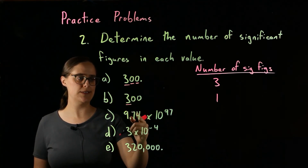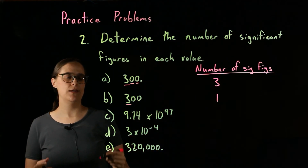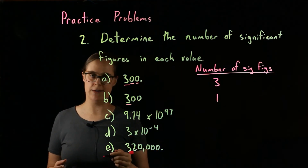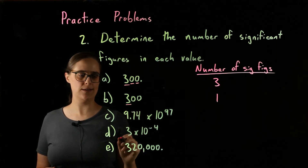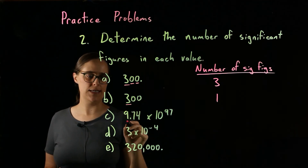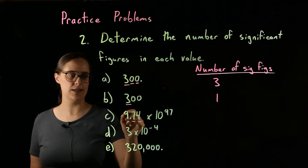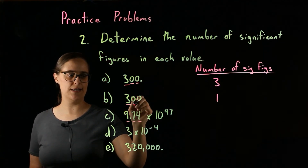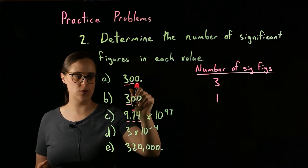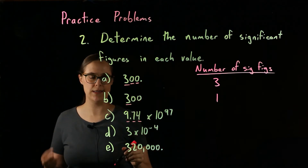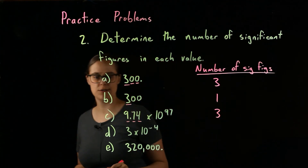Problem C: 9.74 times 10 to the 97. Whenever you have a number in scientific notation, you are just looking at the coefficient. Any and all digits in the coefficient are significant. So the 9, the 7, and the 4 are all significant — that is 1, 2, 3. We have three significant figures.